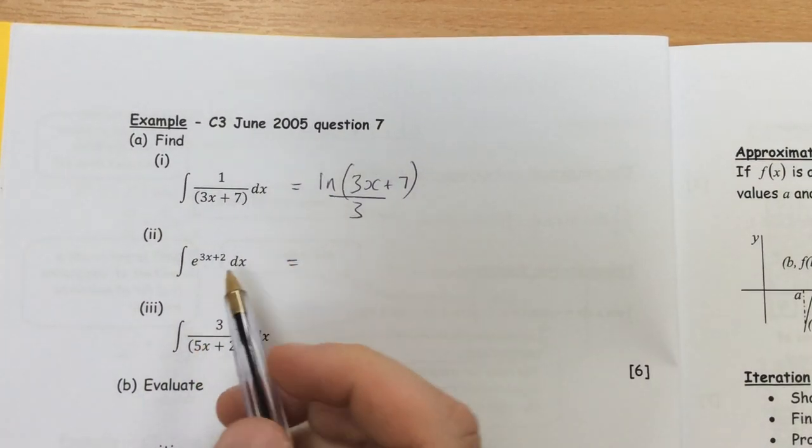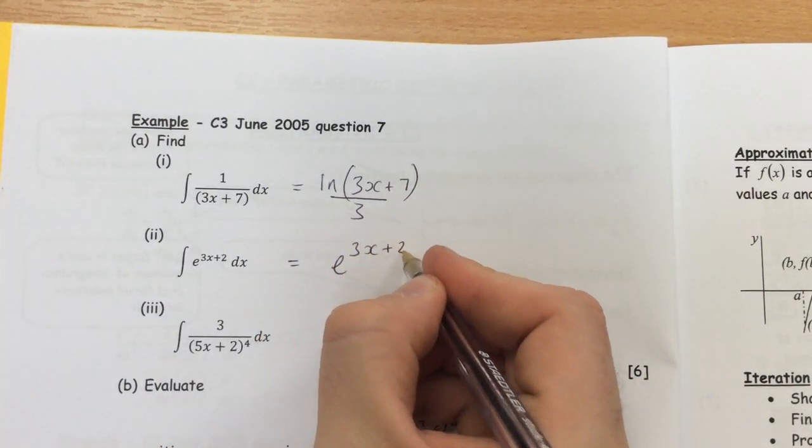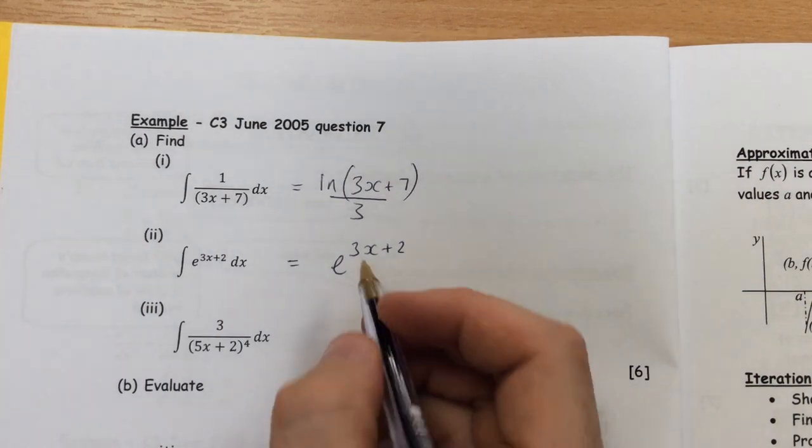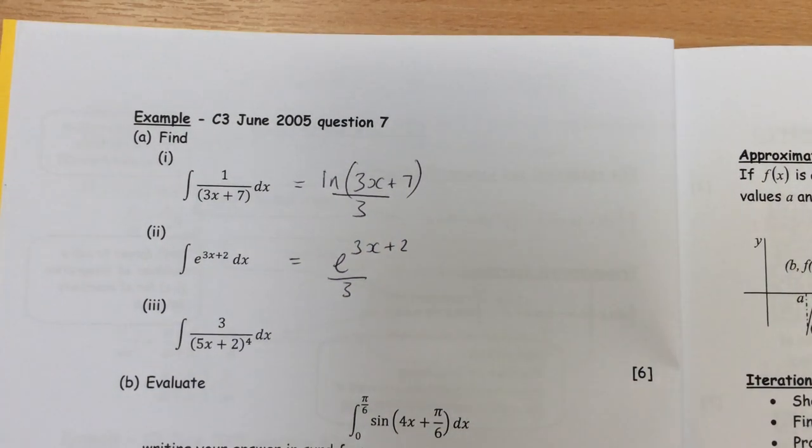Second one, e. When I integrate e, nothing changes, so it's still going to be e to the power of 3x plus 2. But again, I've got to divide it by the differential of whatever that is, and in this case the differential is obviously 3.